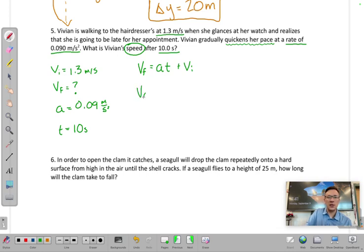So final velocity is equal to the acceleration, which is 0.09 meters per second squared, multiplied by 10 seconds. So she's speeding up at that rate over the course of 10 seconds, plus her initial velocity.